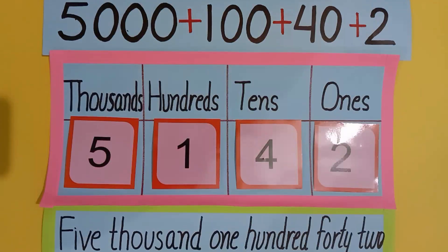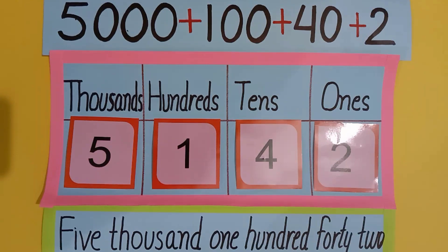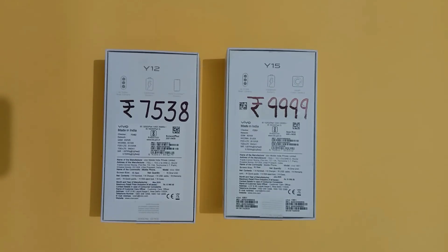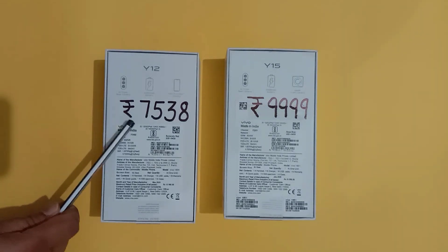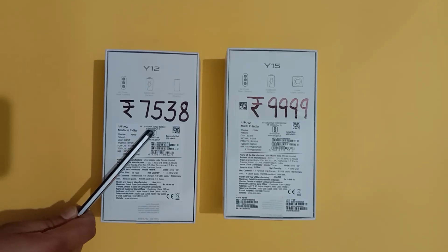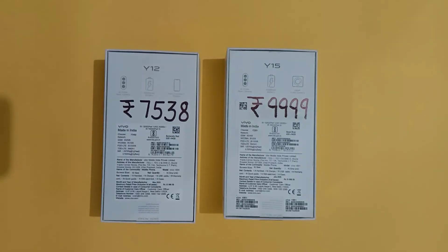So students, you can make any number by taking different notes of rupees one thousand, one hundred, ten or one. Do practice to write these numbers in words, in figures and also on tables. Here I have two boxes of mobile phones. Prices of the mobile phones are given on the boxes. In your homework, write these numbers in words, in figures and also on the table. Thank you. Have a nice day.